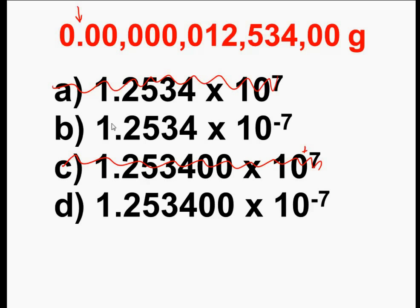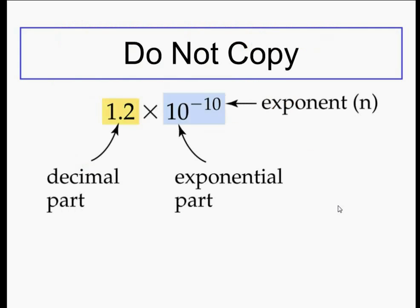Lastly, the question is: do the sig figs match? I have 1, 2, 3, 4, 5, 6, 7 — there are seven sig figs. If one answer choice has five sig figs and the original has seven, it has the right exponent but the wrong number of sig figs — that's how you key in on a multiple choice test. For all you math nerds, the parts of scientific notation are the decimal part and the exponent part, which is nothing more than a power of 10 — it can be either positive or negative.